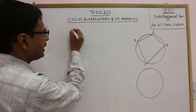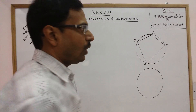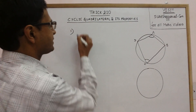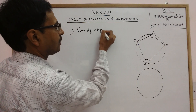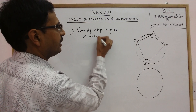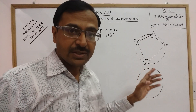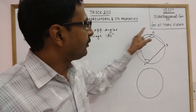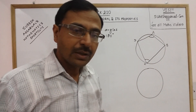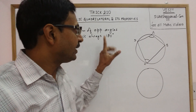The first property of a cyclic quadrilateral is that the opposite angles — that is angle A and the opposite angle C — always sum to 180 degrees. So if you measure these two angles and add them up, you will get 180 degrees irrespective of where you have taken these four points. If the quadrilateral is cyclic, its opposite angles are always supplementary.